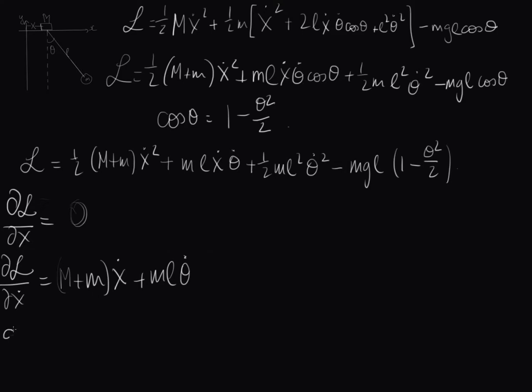So this is our equation for DL dx dot. Now we have to find the derivative of this with respect to time, so D dt of DL dx dot is just, this remains constant and this remains constant, so this is just M plus m x double dot, because we're taking the derivative of this twice now, plus ML theta double dot.